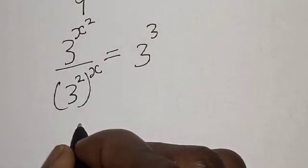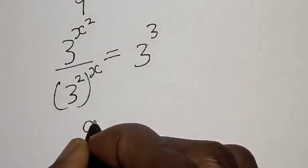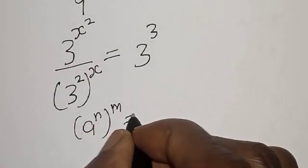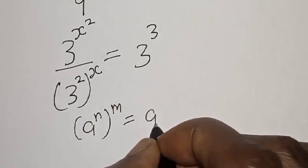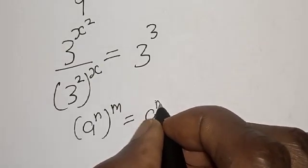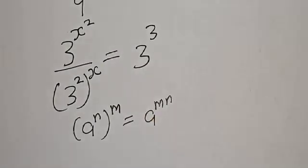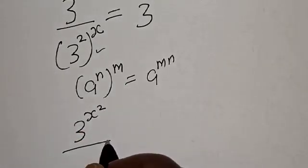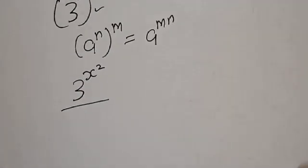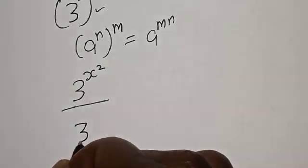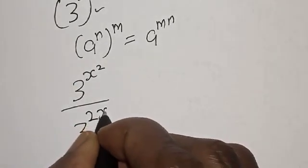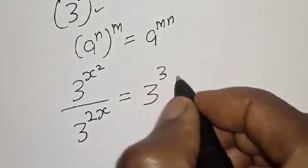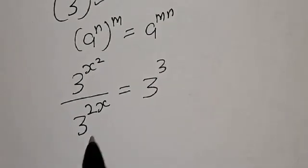Note that if you have a raised to power n, raised to power m, this is the same thing as a raised to power m times n. So we get 3 raised to power s squared divided by 3 raised to power 2s, which is equal to 3 raised to power 3.